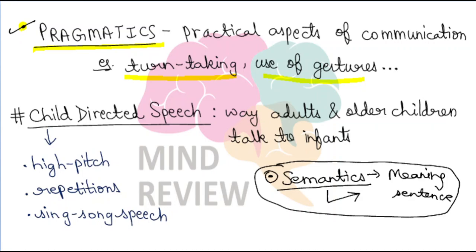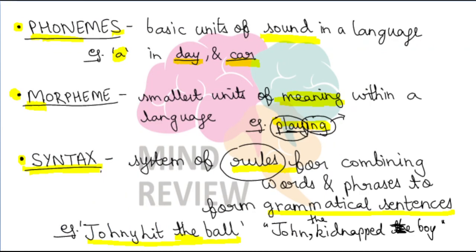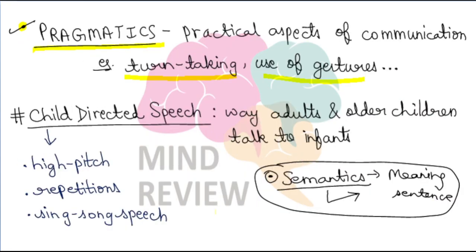Quick recap: phoneme — basic unit of sound; morpheme — smallest unit of meaning in language; syntax — related to rules and grammar; semantics — related to the meaning you draw from a sentence; and pragmatics — P for pragmatics, P for practical aspects of communication. These are the key terms related to language.